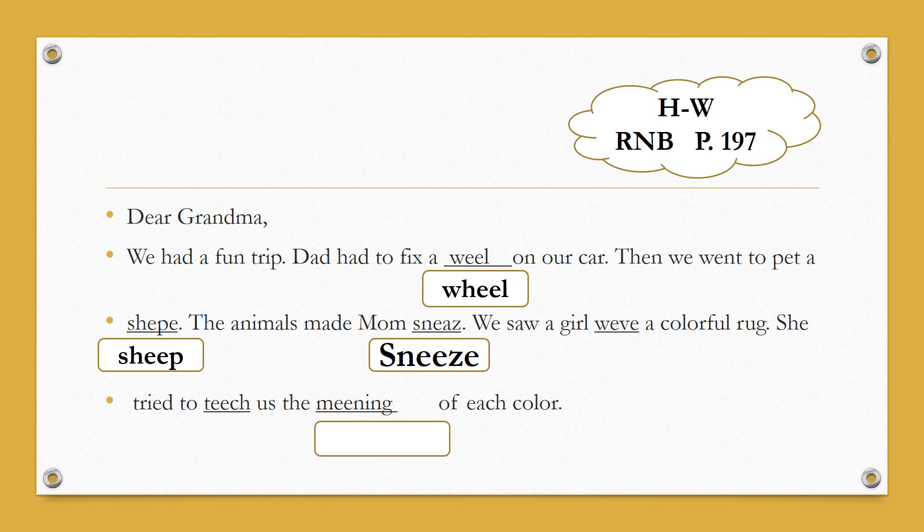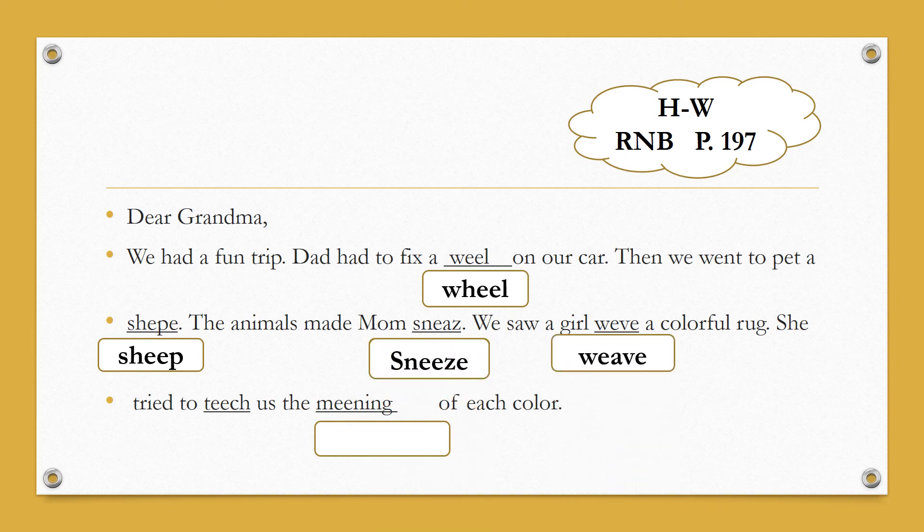We saw a girl with a colorful rug. Weave - a letter is missing here. She tried to teach us the meaning. Teach. The meaning of each color. Meaning - just one letter here makes it wrong. Meaning of each color.